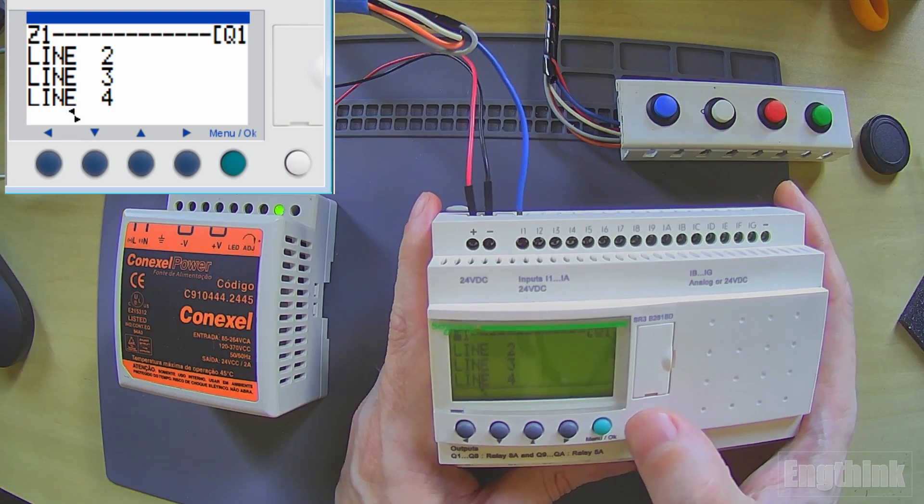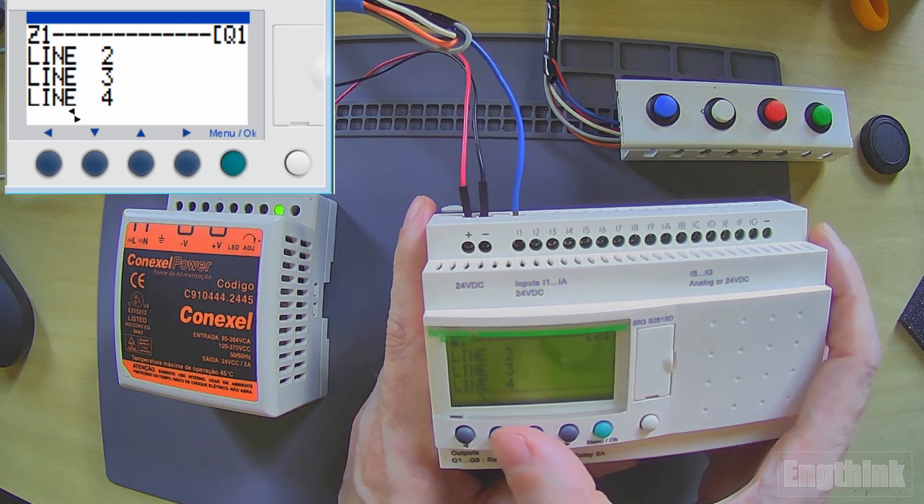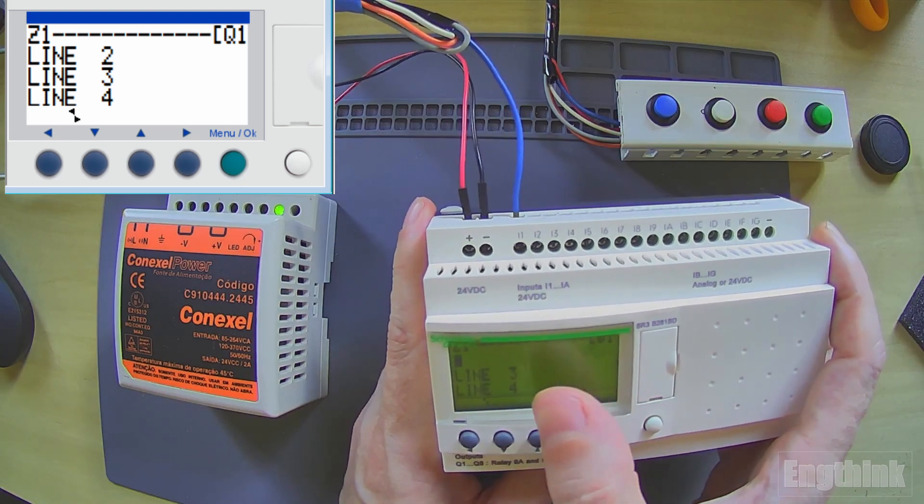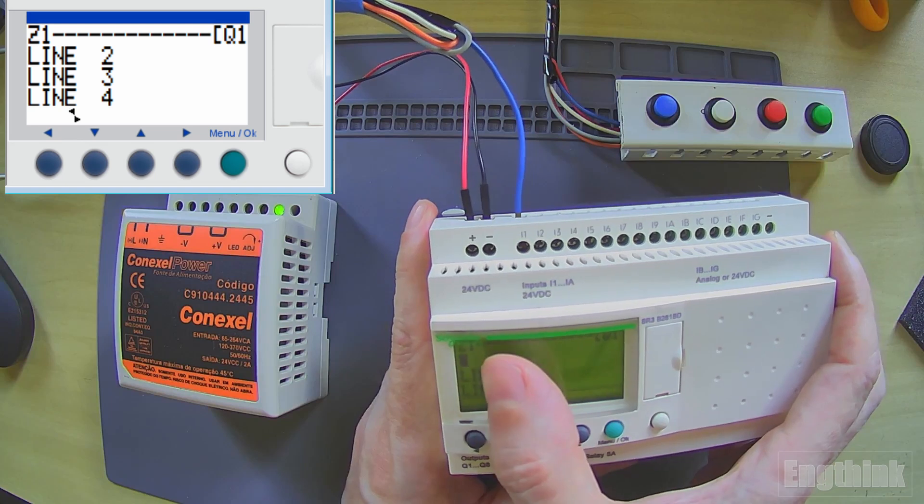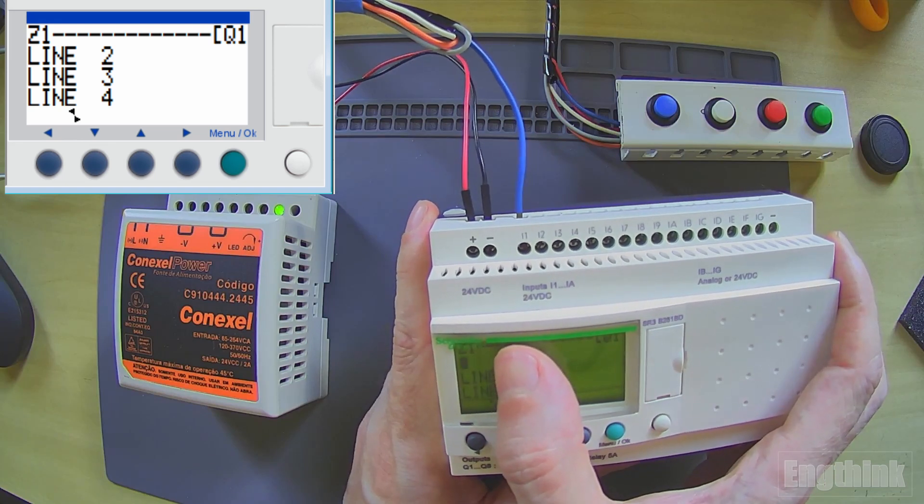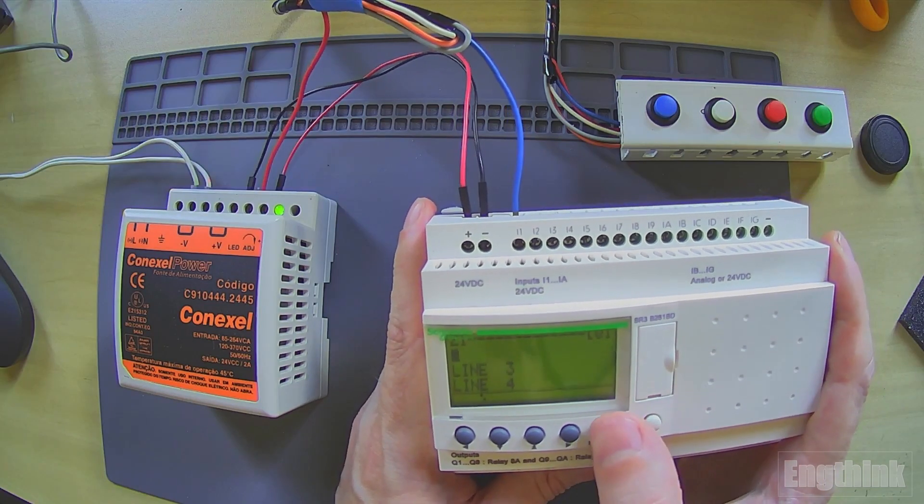Once uppercase Z is selected, I will move the cursor just to confirm that we have a Z function selected. Then let's press OK.